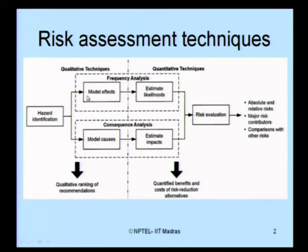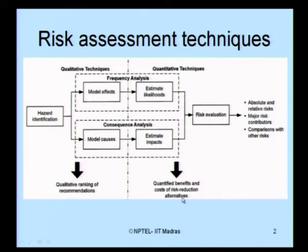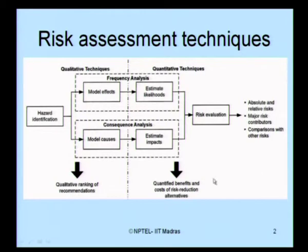Ultimately, you can do either a frequency analysis or a consequence analysis to come to risk evaluation from hazard identification. Once you do a qualitative technique, you can get a qualitative ranking of your recommendations. If you do a quantitative technique, you can come up with quantified benefits and costs of risk reduction alternatives. Once you do a risk evaluation, you find the absolute and relative risks present in the system, the major risk contributors, and compare and rank them.